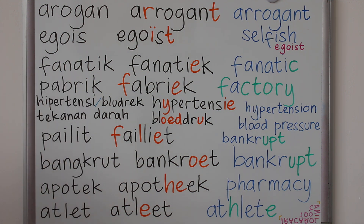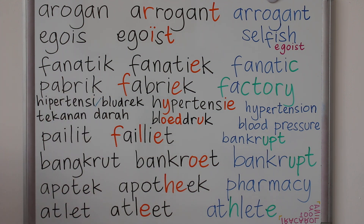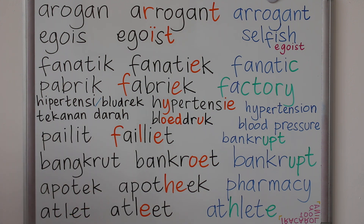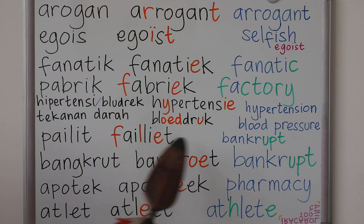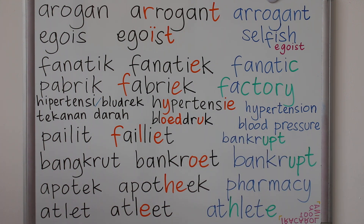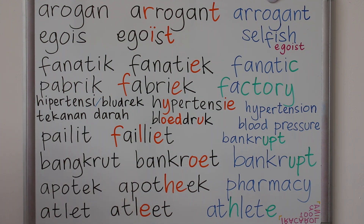Hipertensi. Blood pressure. In Indonesian, 'tekanan darah' — 'tekanan' means pressure, and 'darah' means blood. So in Indonesian, it's pressure first and then blood: tekanan darah. That is the word order difference from English.